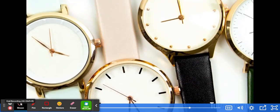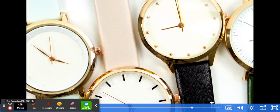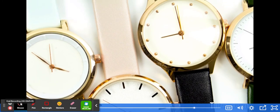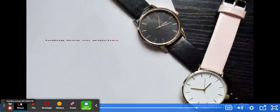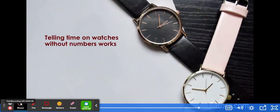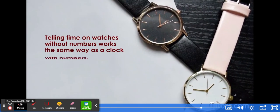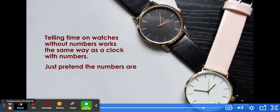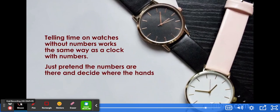Some very fancy watches do not use the printed numbers. You are expected to know what the bolder marks mean. Telling time on watches without numbers works the same way as a clock with numbers. Just pretend the numbers are there and decide where the hands are pointing.